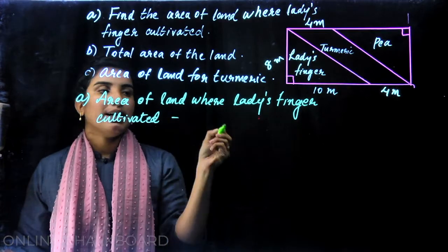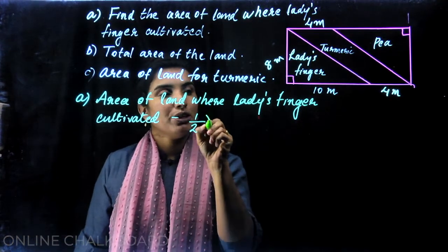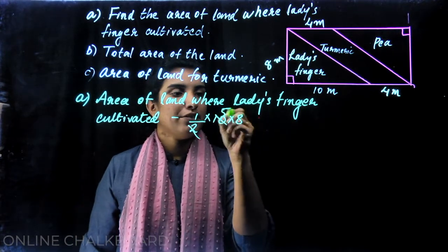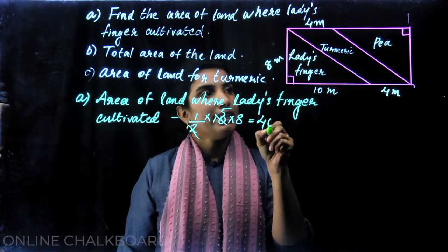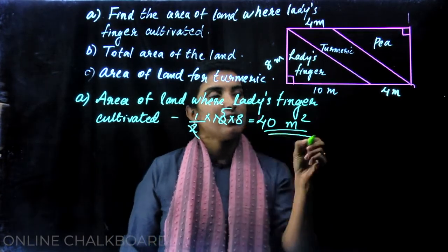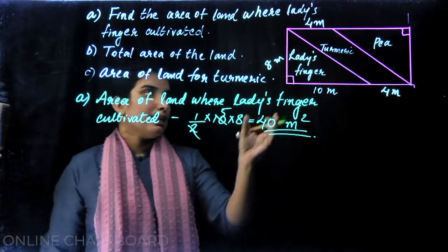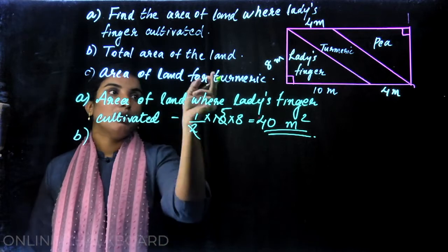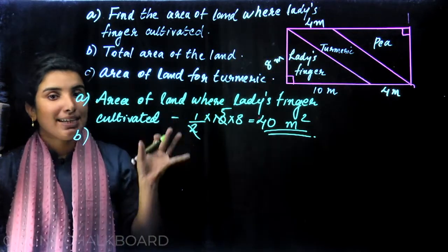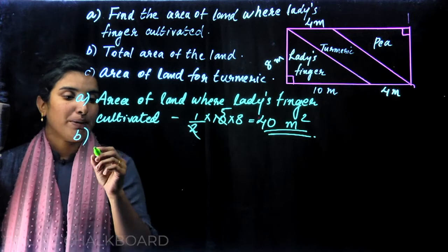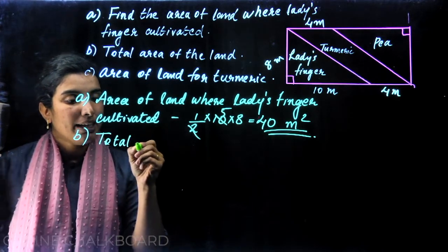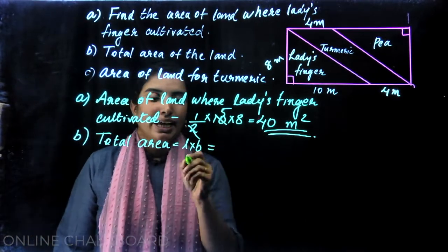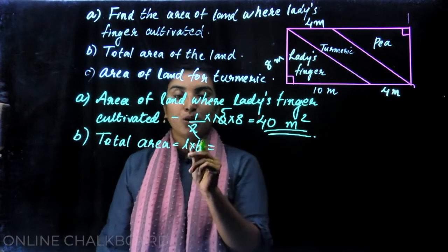Ladies finger cultivated area is a right-angle triangle. You can use sides 10 and 8. This is the right-angle triangle area. The total area is the rectangle area, which is L into B — length into breadth.